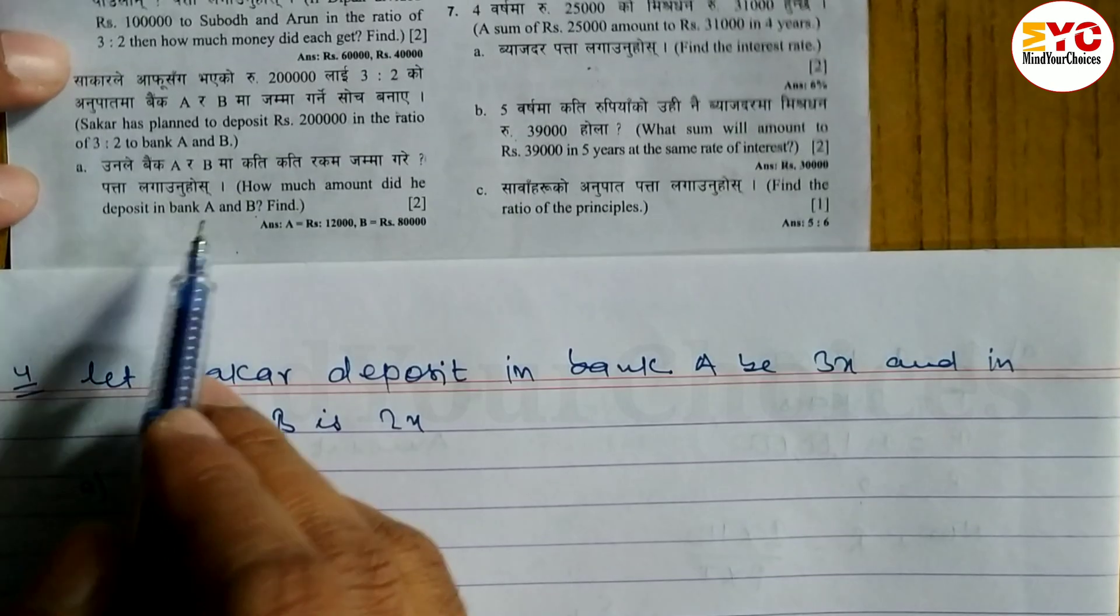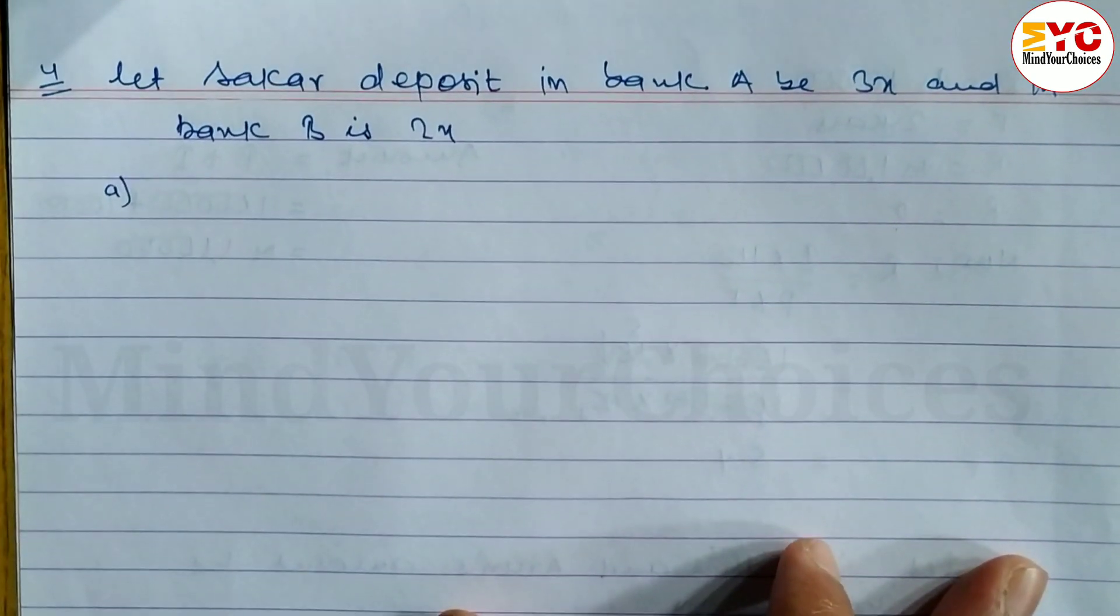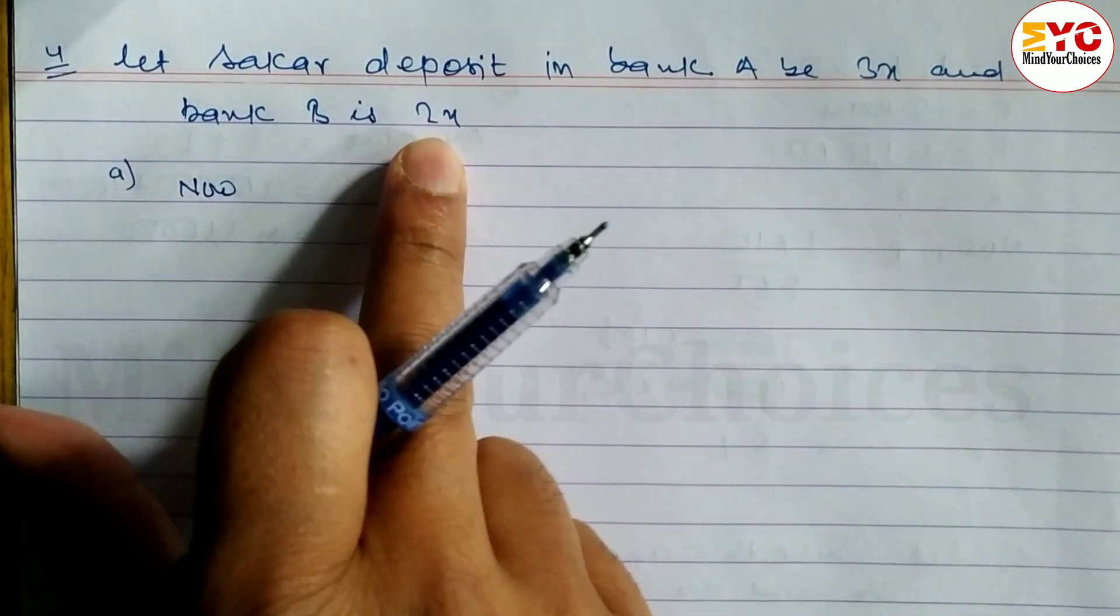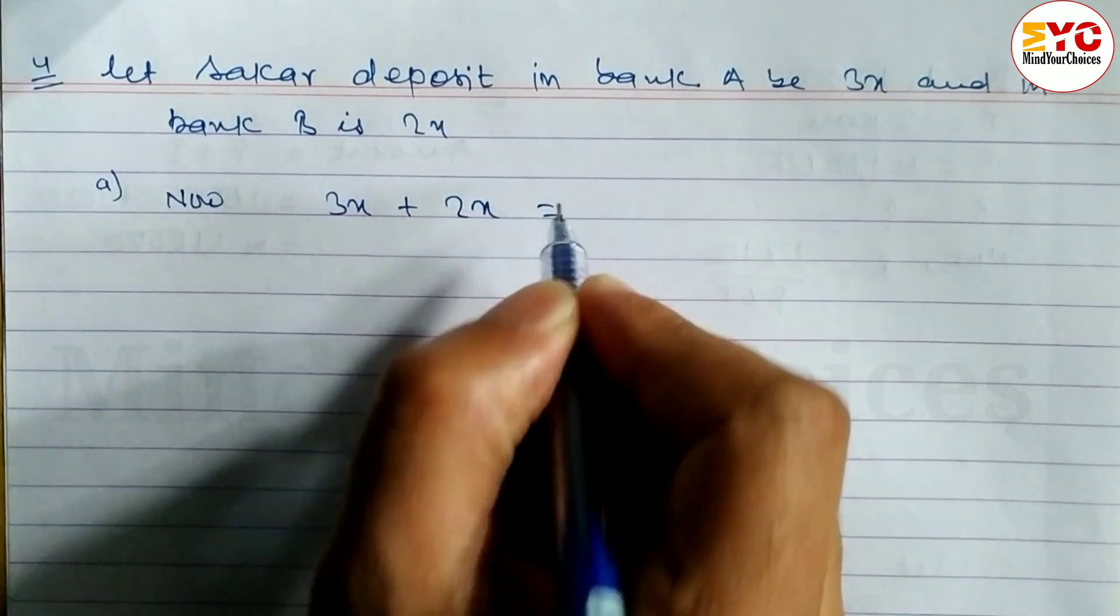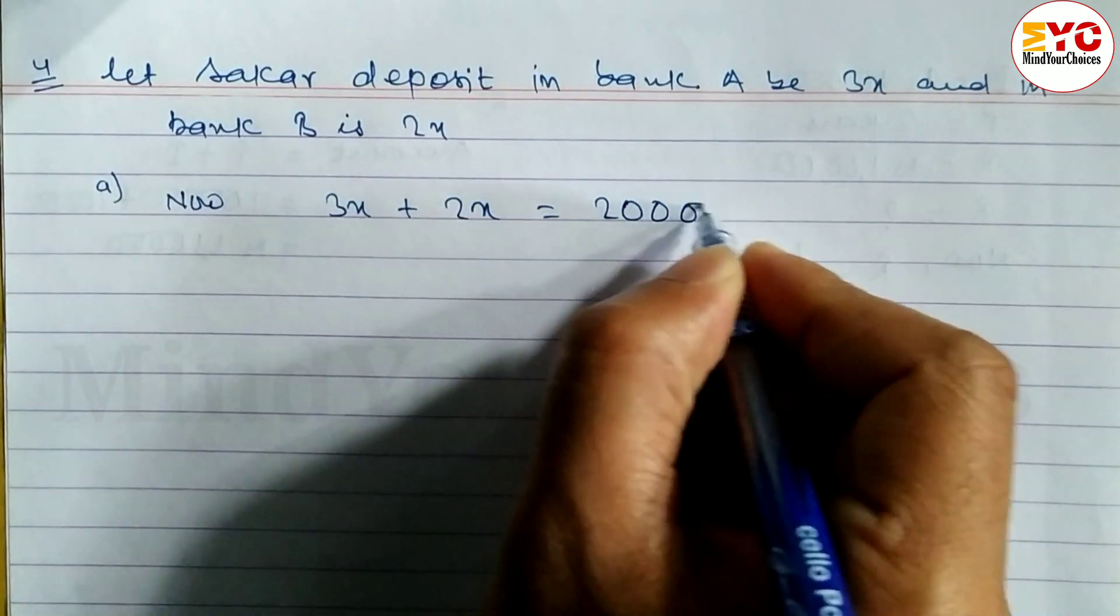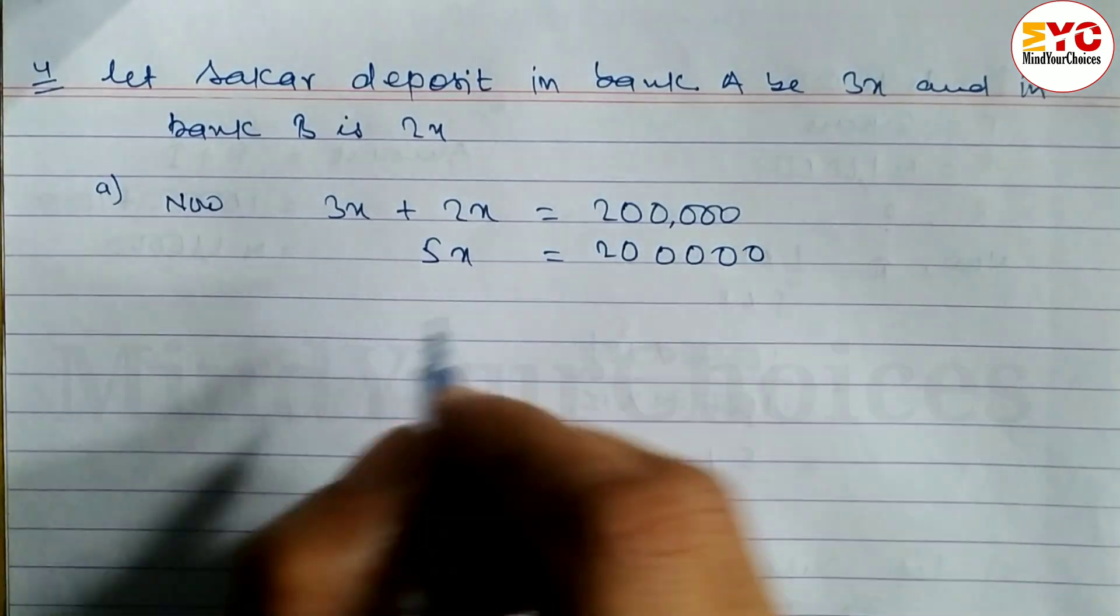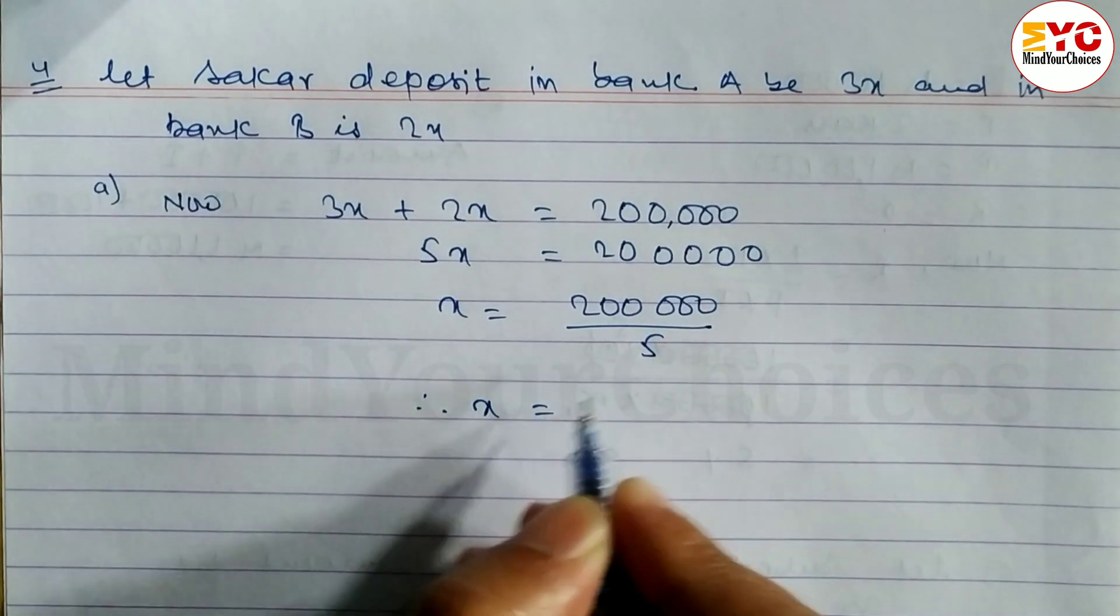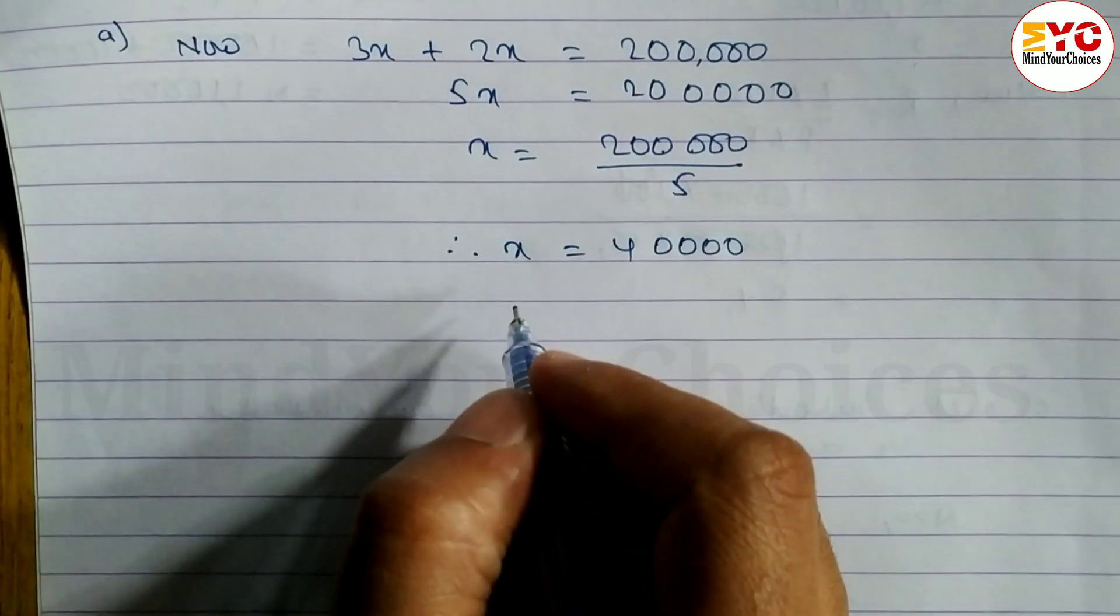The question asks how much amount did he deposit in bank A and B? The total amount he will deposit is 2 lakhs. So 3x plus 2x is equal to 2 lakhs. 5x equals 2 lakhs. Now x equals 2 lakhs divided by 5. Therefore x equals 40,000. The value of x is 40,000.